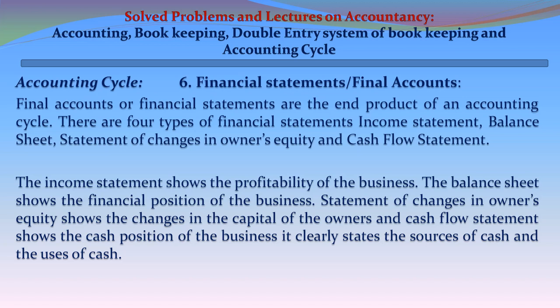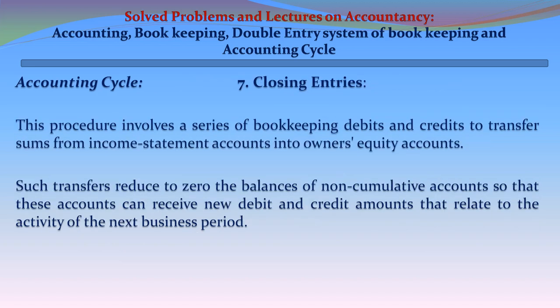Step 7 - Closing Entries: This procedure involves a series of bookkeeping debits and credits to transfer sums from income statement accounts into owner's equity accounts. Such transfers reduce to zero the balances of non-cumulative accounts, so that these accounts can receive new debit and credit amounts relating to the activity of the next business period.